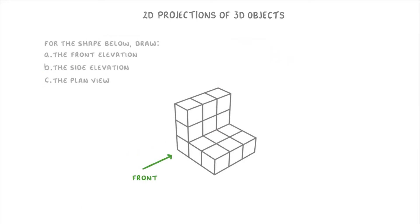Let's have a go at another one, and feel free to pause the video and have a go yourself. So for this question, you need to do basically the same thing. You need to draw out the front elevation, the side elevation, and the plan view of the shape that they've given us.